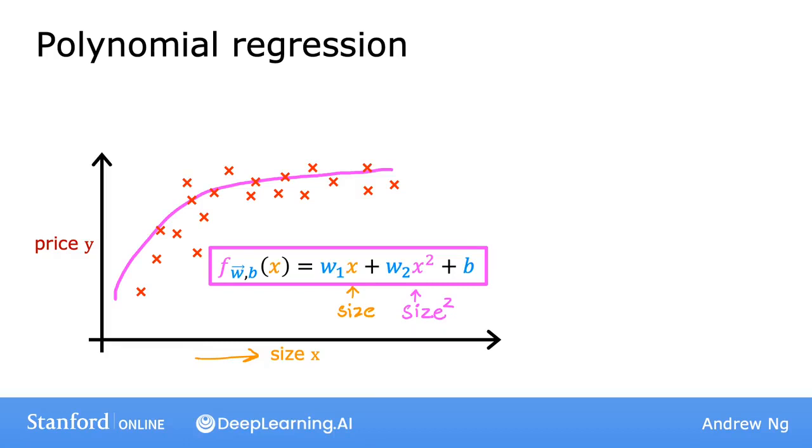But then you may decide that your quadratic model doesn't really make sense because a quadratic function eventually comes back down. We wouldn't really expect housing prices to go down when the size increases, right? Big houses seem like they should usually cost more.